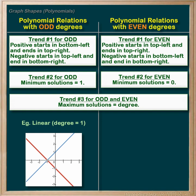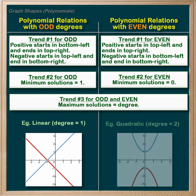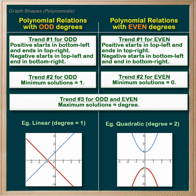For the even degree relationships, an easy one to remember is a quadratic — it always starts in the top left and turns around back to the top right. So clearly it can avoid the x-axis altogether, touch it once, or cross it twice: a minimum of zero solutions and a maximum of two solutions. That's my reference for the even degree relationships. Remembering some basic examples will help you remember the trends we've covered here.